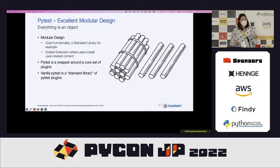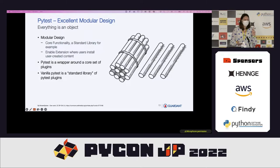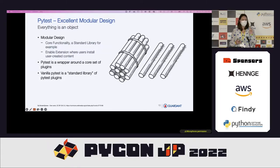When you open up dunder main, you see three lines of code. The first line imports PyTest. Why would the dunder main of PyTest import PyTest? The second line is to run the main on PyTest. That's really weird.